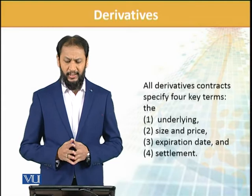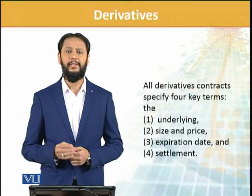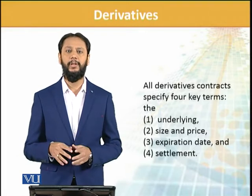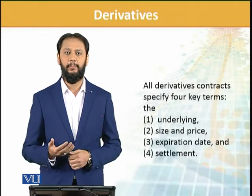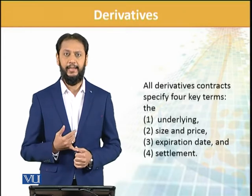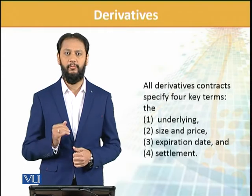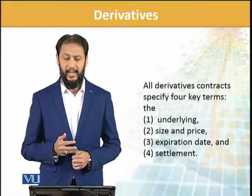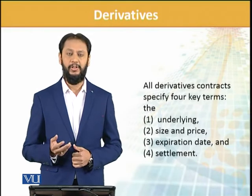All derivative contracts specify four key terms. These terms apply across all kinds of derivatives. The four key terms are: the underlying, size, price, and the expiration date.